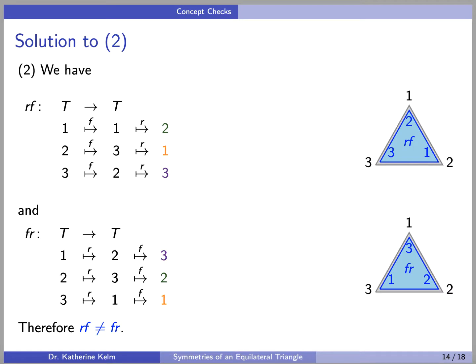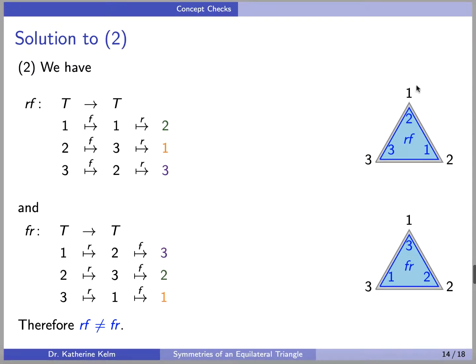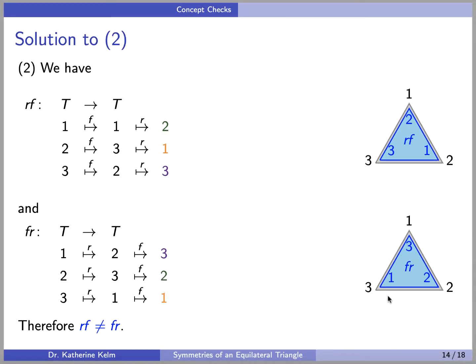Okay, so here's our solution. We have RF, which is to do F first and then R. And FR means to do R first and then F. And you can see right away that these functions are not equal because RF in particular sends 1 to 2, but FR sends 1 to 3. And the triangles end up in different positions.